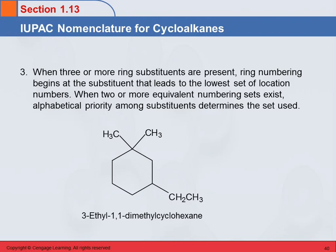If you have three or more substituents, you go based on the lowest set of locant numbers. If you have two or more equivalent numbering sets, alphabetical priority determines the set used.